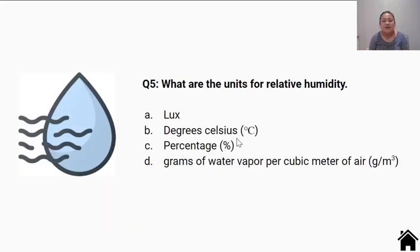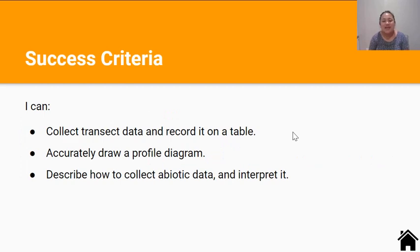Question 4: You must include abiotic data in your written report — true or false? Question 5: What are the units for relative humidity? A: Lux. B: Degrees Celsius. C: Percentage. D: Grams of water vapour per cubic metre of air. Ka pai — you've reached the end of the lesson. By now you should be able to collect transect data and record it on a table, accurately draw a profile diagram, and describe how to collect abiotic data and interpret it. Thanks for watching and I'll see you in the next video.